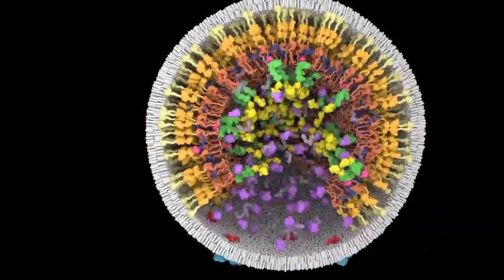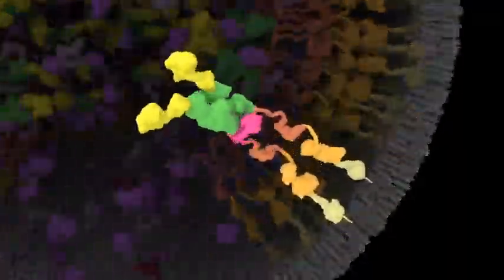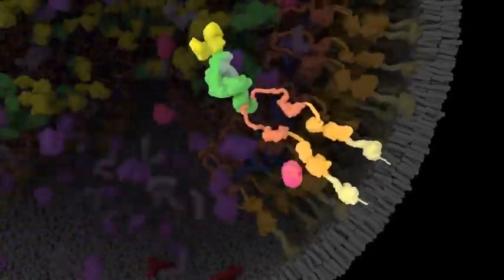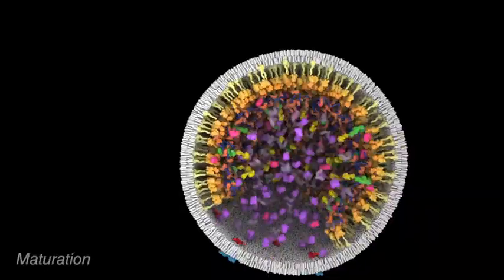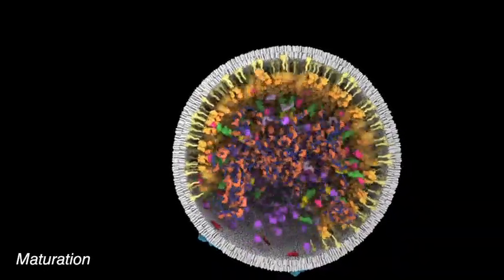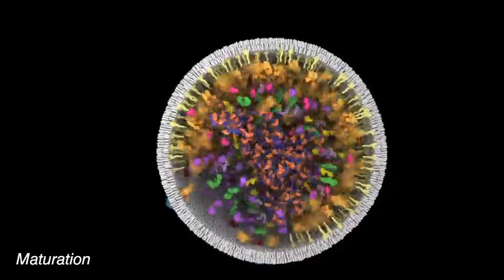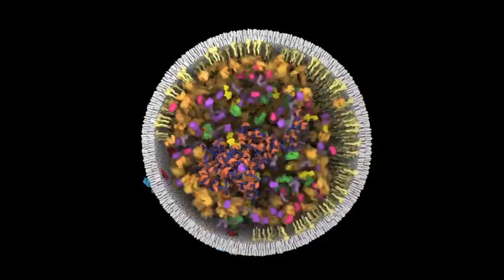Once released, the new virus rapidly undergoes a process known as maturation. Maturation is triggered by the dimerization and release of proteins known as protease, shown in pink, which act as molecular scissors, cutting the GAG protein at specific sites to release shorter proteins, including nucleocapsid proteins that go on to bind and compact the viral RNA, and capsid proteins that form a conical shell around the RNA.